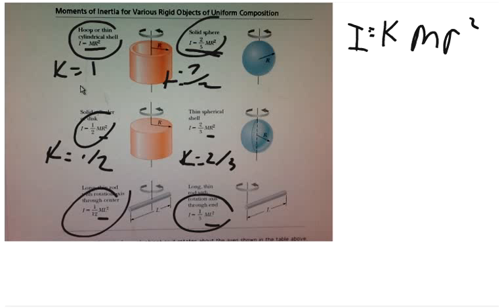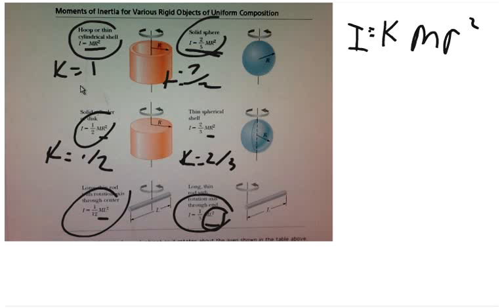For the rod-like objects down here, K is 1/3 and 1/12. There's also a difference in that instead of the radius, those equations use the entire length of the bar. We won't need that distinction except in Part A — Parts B and C don't ask about those objects, so we mainly need to pay attention to the four rotating objects.